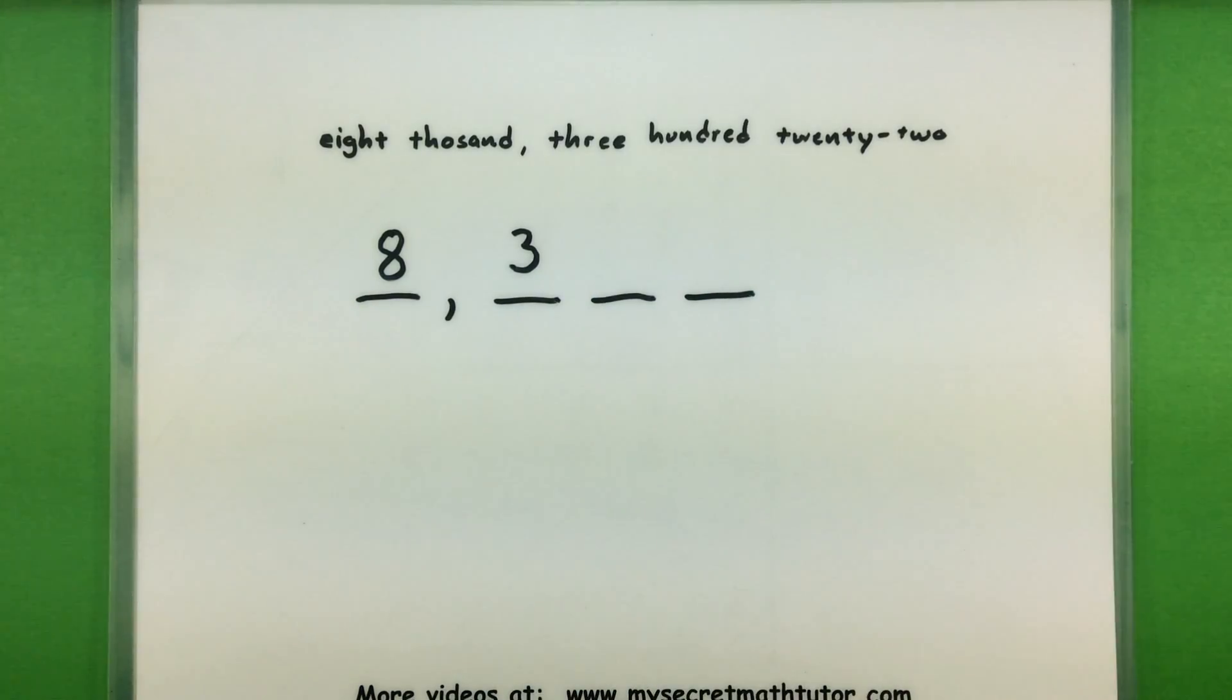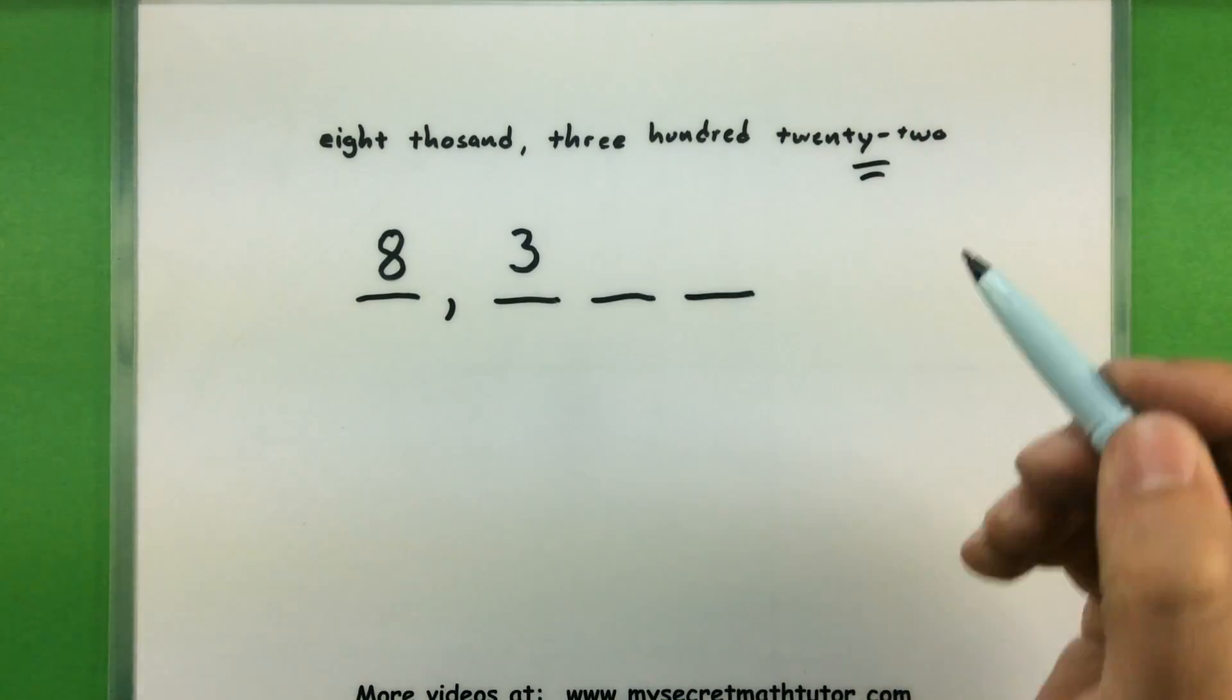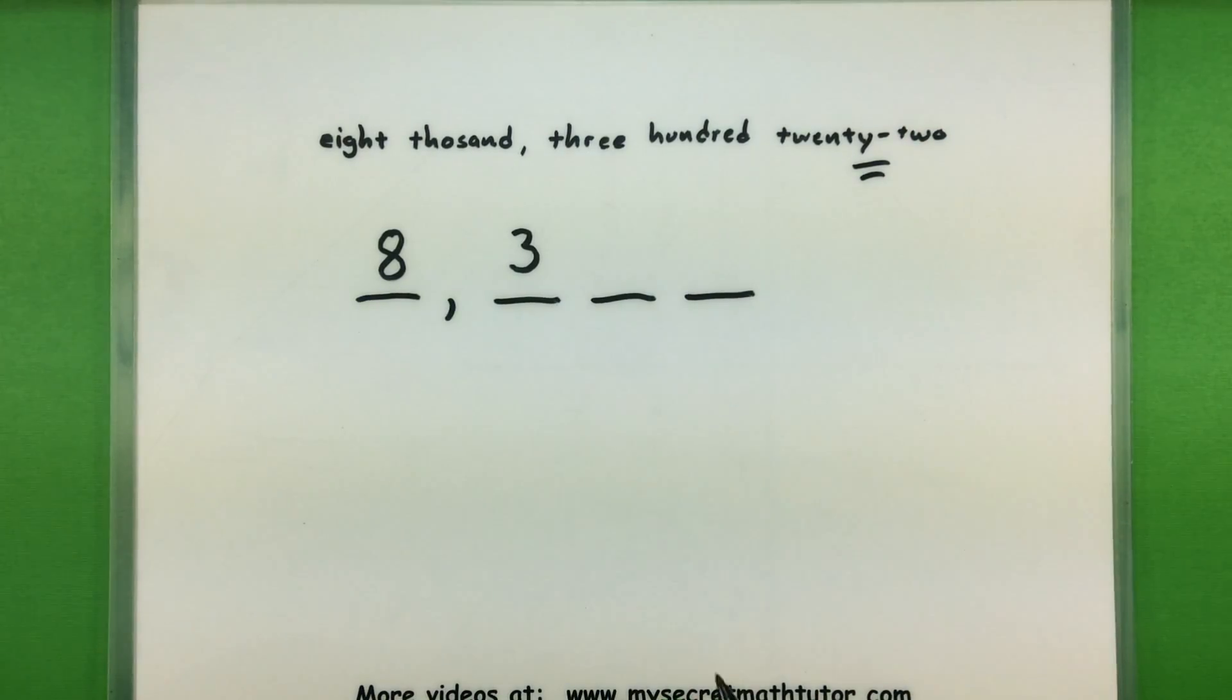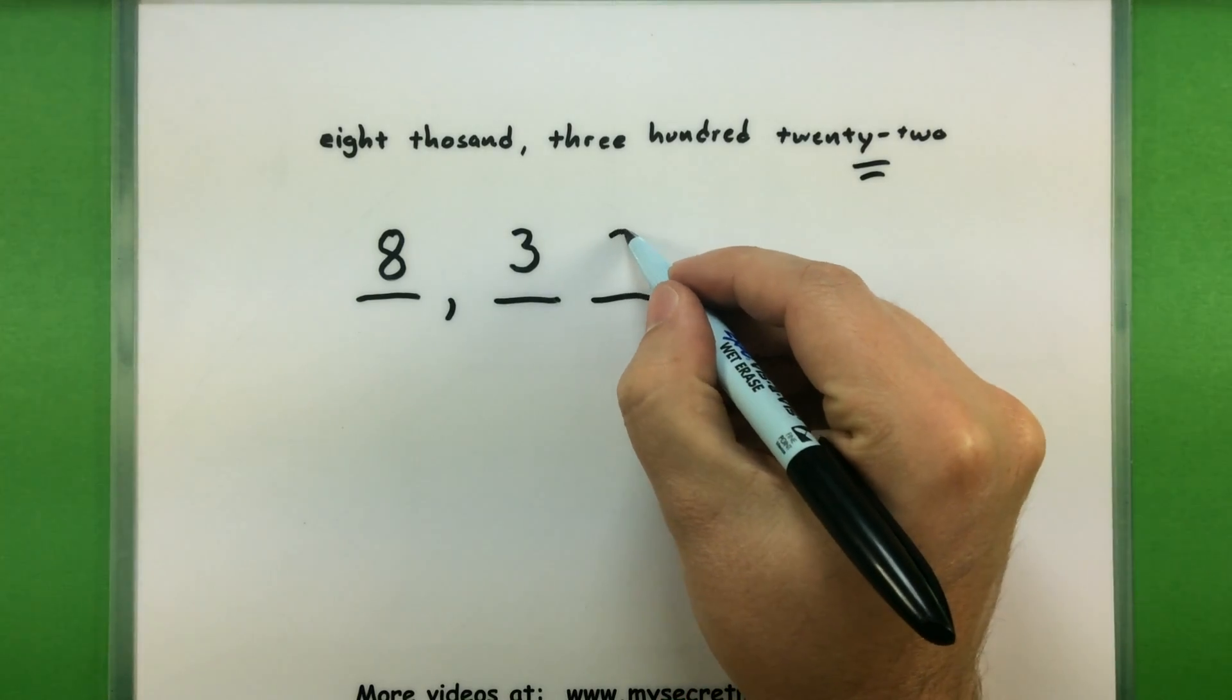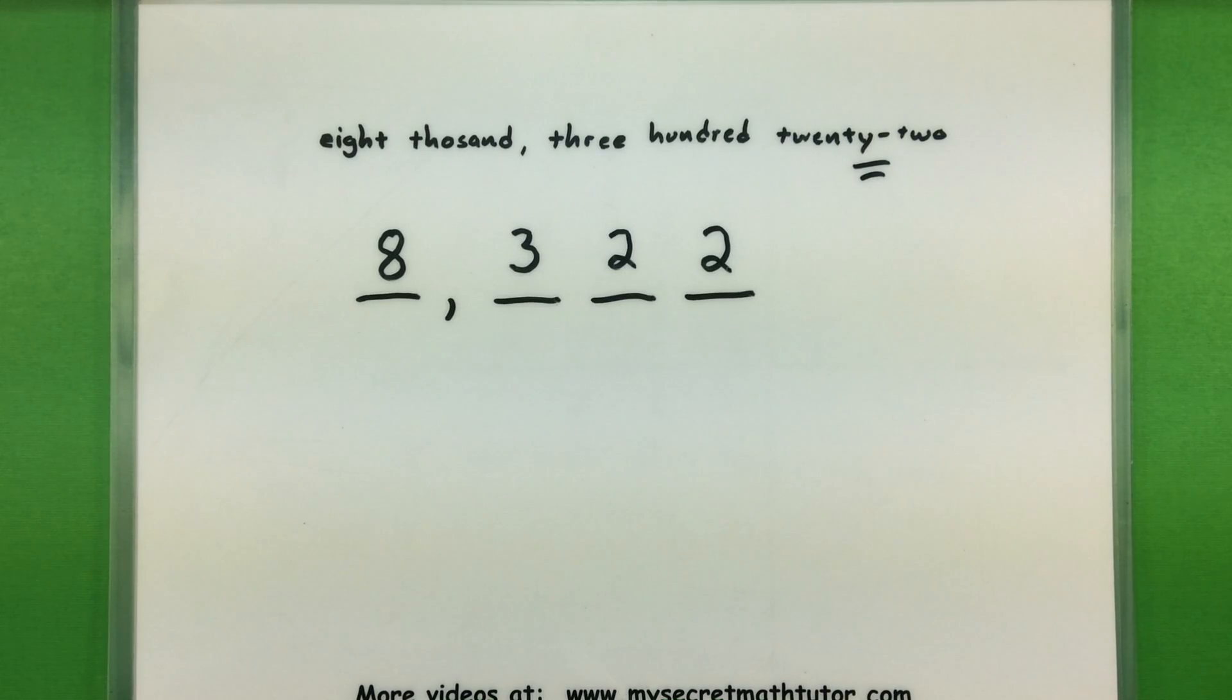And then it doesn't look like it identifies any tens, but sure enough, here's one of those instances. The number 22 actually takes up two place values. It means that I have two in the tens and a two in the ones place. So here numerically is the number 8,322.